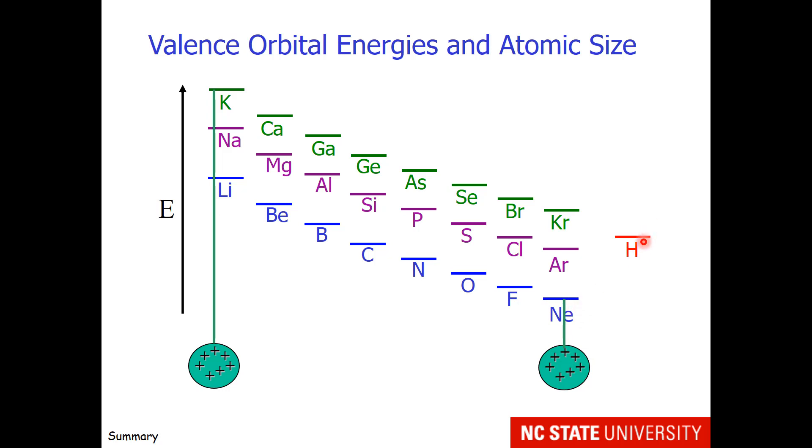neon for example has low energy valence orbitals and a small atomic size. Hydrogen tends to be a little bit unique among the elements, and it's very similar to carbon in its orbital energies. So on the left side of the periodic table, in general, we have atoms that are large and their electrons are very loose, meaning they might fall off the atom. And on the right side of the periodic table, we have very small atoms that hold tightly to their electrons.